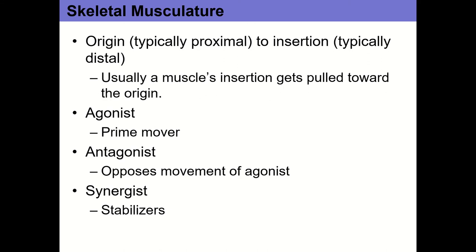Some of this we talked about last time with chapter one. In terms of skeletal musculature and the structure of that musculature, you're familiar with the terminology: the origin, the insertion, and then action. The origin of a muscle is where it starts, the insertion is where it stops. Typically the origin is located proximally, so close to the body, and the insertion is located distally, so far from the body.